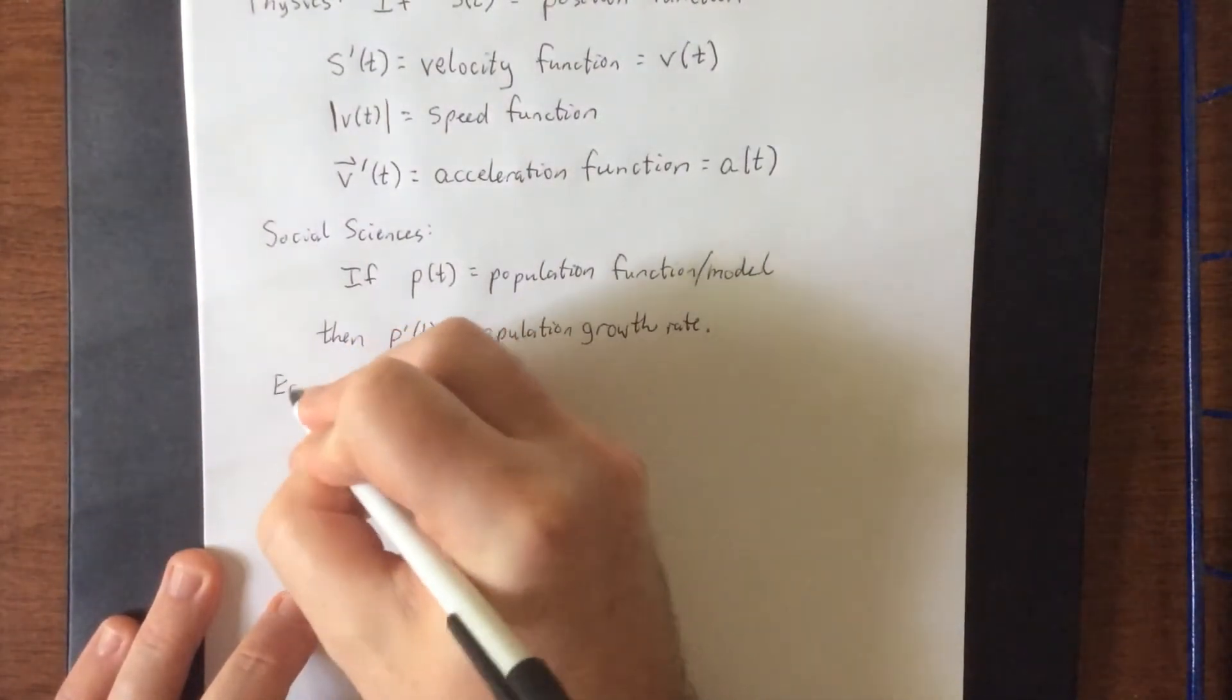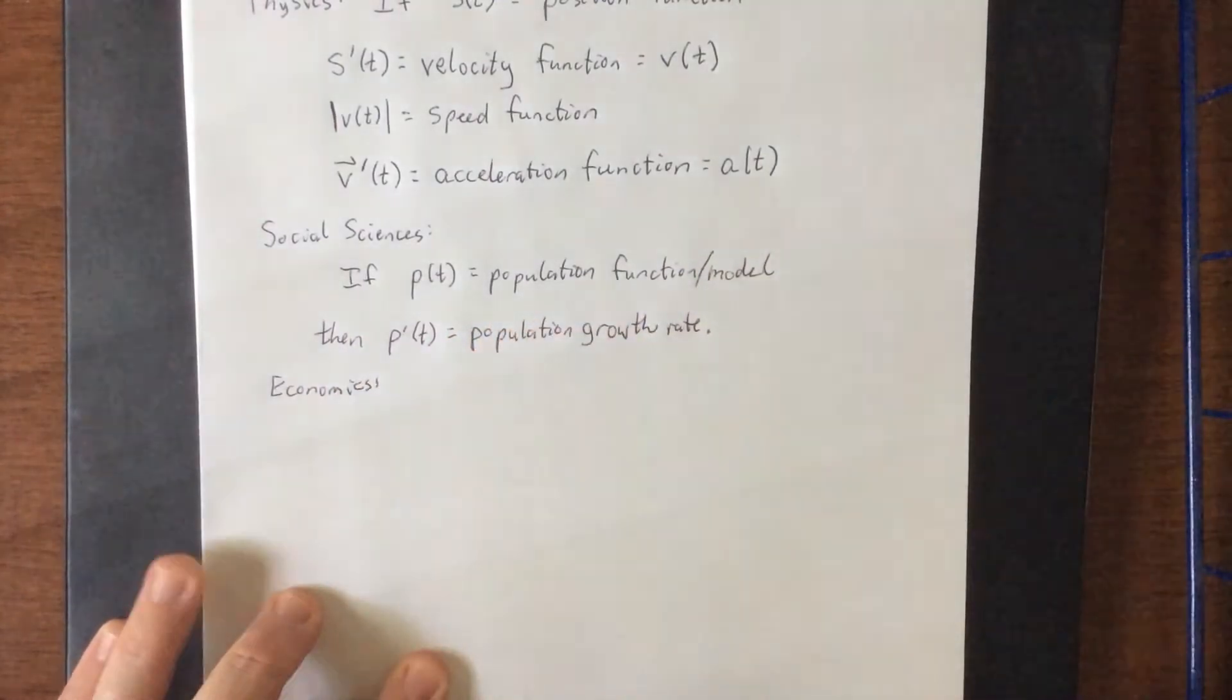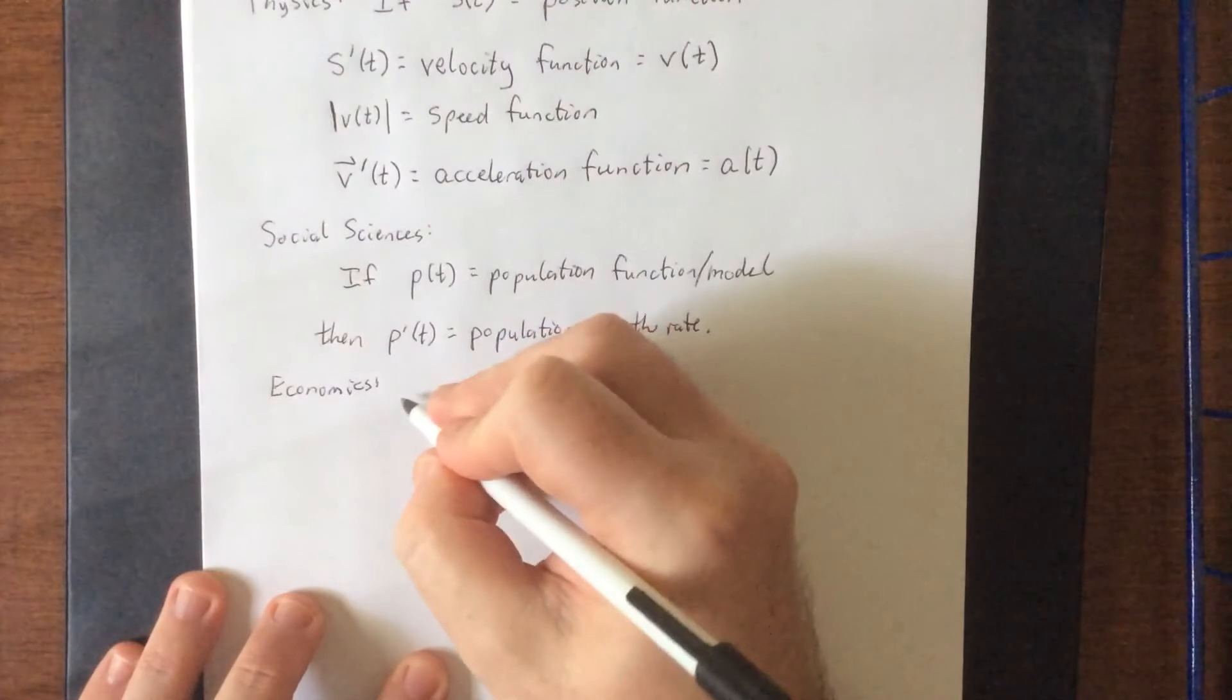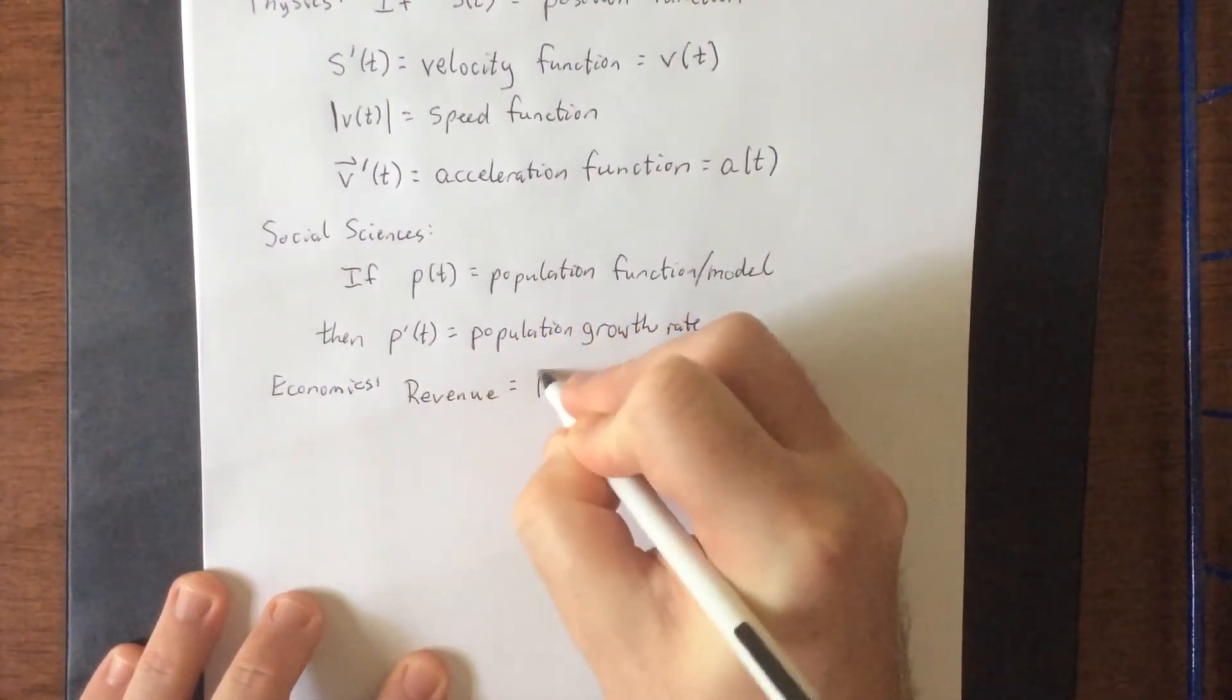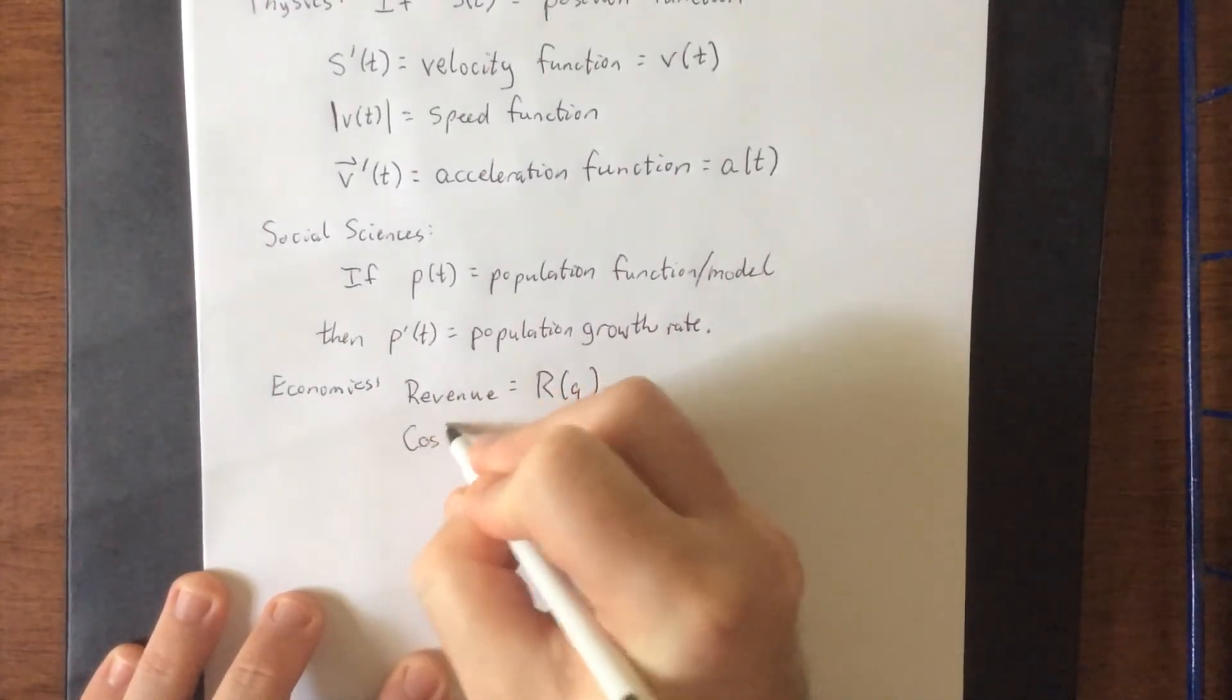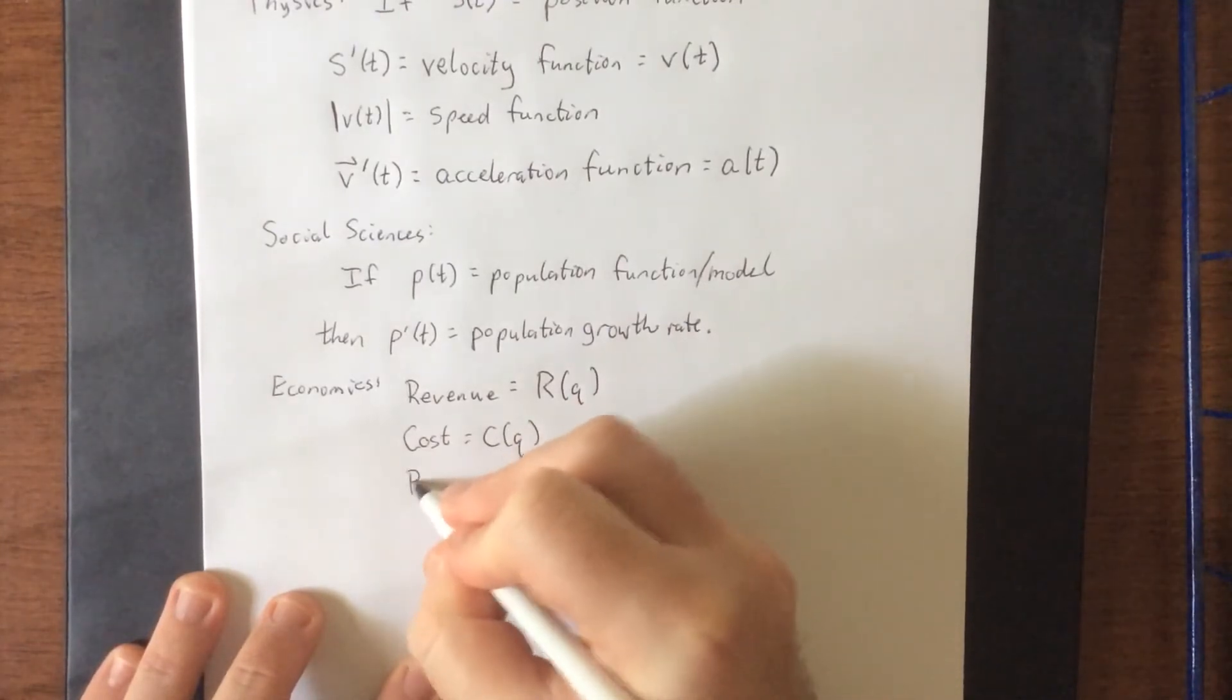Then, specifically in economics, there are three specific kinds of functions that we talk about there. And they are all functions of how many units are produced or sold. They are known as revenue, that is R of q, cost C of q, and profit.